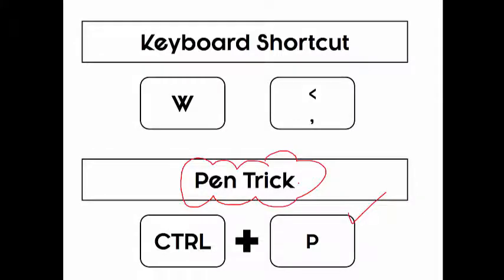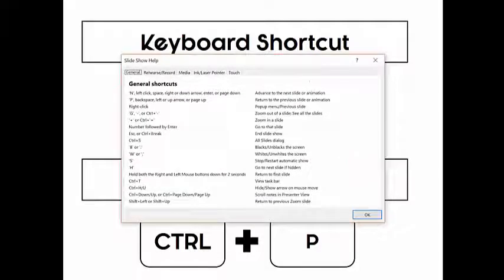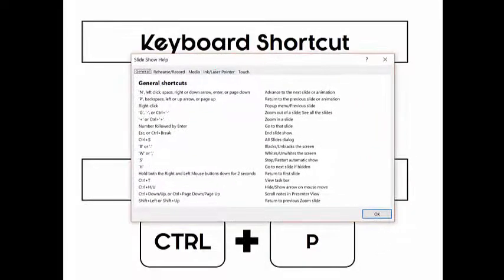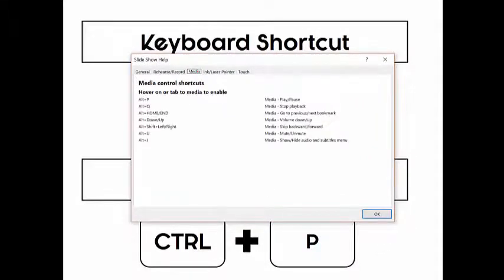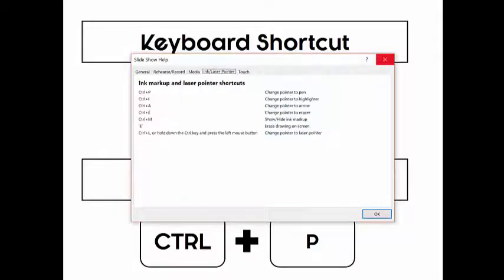All right. One other quick, cool keyboard shortcut here. If you ever need some more, just hit F1 while you're in presentation mode. F1 will give you 32 different keyboard shortcuts to help you fast track your presentation and help get you to happy hour.